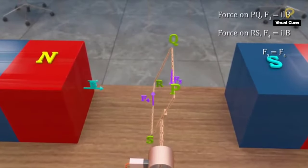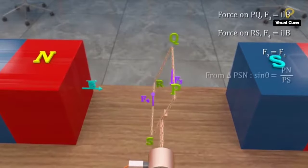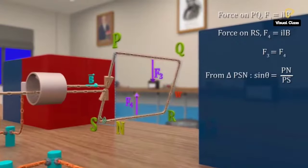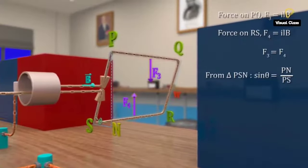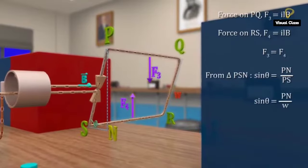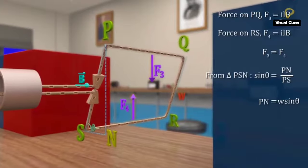From triangle PSN, sin theta is equal to PN by PS. This gives the distance between the forces PN equal to W sin theta.